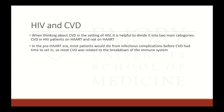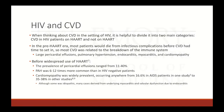When thinking about cardiovascular disease in the setting of HIV, it's helpful to divide it into pre-HAART and post-HAART categories. In the pre-HAART era, most patients died from infectious complications long before cardiovascular disease could set in, so most CVD was related to immune system breakdown — things like large pericardial effusions, pulmonary hypertension, endocarditis, myocarditis, and cardiomyopathy. Pericardial effusions ranged from 11% to 40% prevalence. Pulmonary hypertension was 6 to 12 times more prevalent than in non-HIV-infected patients. Cardiomyopathy occurred in 16.6% to 38% of AIDS patients.